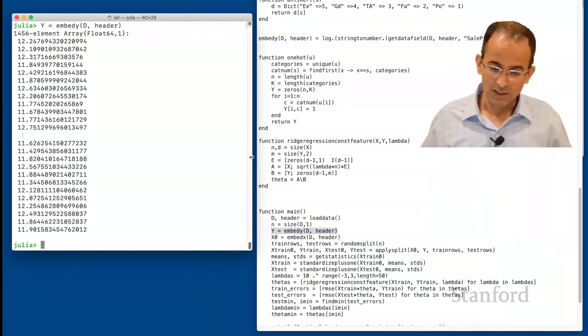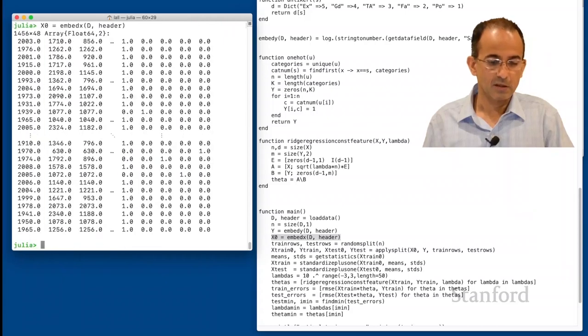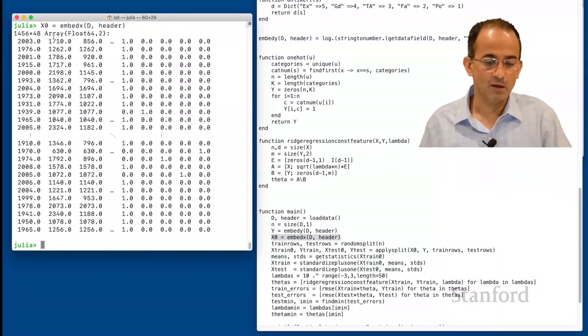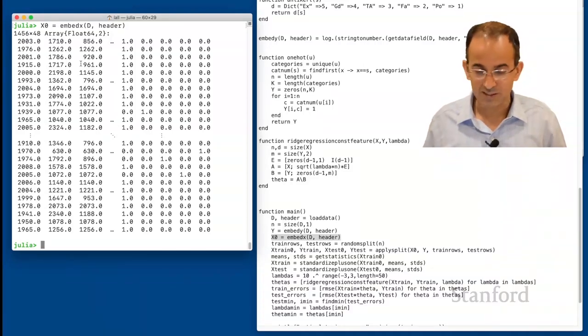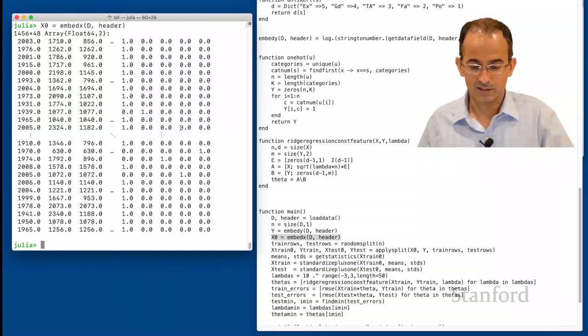Now we can embed x. This is substantially more complicated because we've got a bunch of different fields. Let's take a look at that. First of all, let's see what it does. That returns for us x, which is our 1456 by 48 array of the different fields that we have, 20 fields, some of which are encoded as one hot. And so they correspond to more than one column of this matrix. And all of our data records, all 1456 different houses.